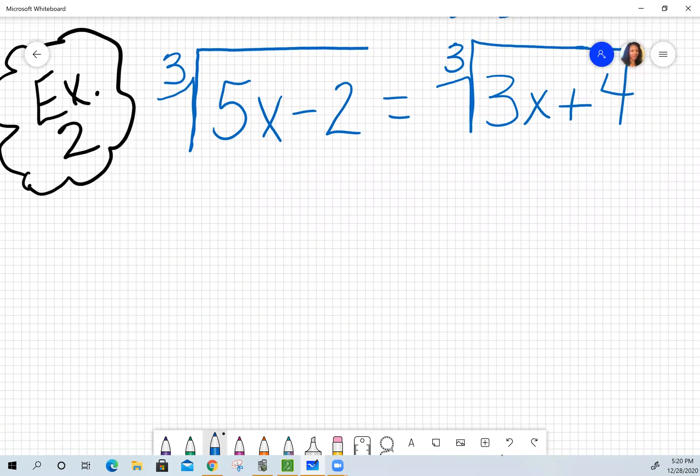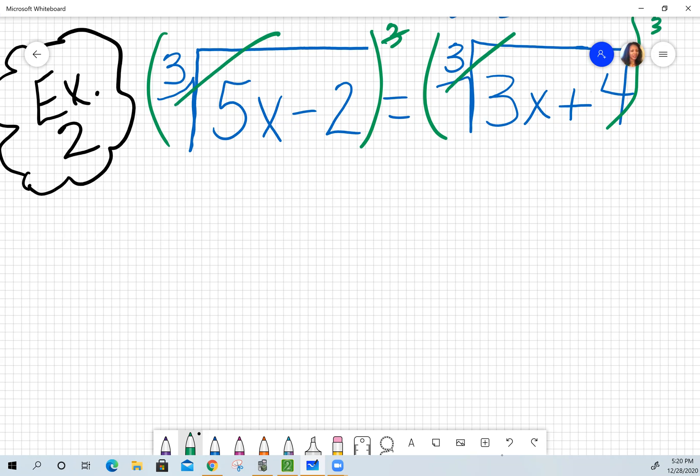This one looks scary to some people, but the rule is, if both sides of your equation have the exact same radical, all you have to do is drop it. The reason you're going to drop it is because if I am trying to get rid of that cube root, I said what I have to do is to cube it. What I do to one side, I have to do to the other. I'm getting rid of it. That's all that means. Then you can go ahead and solve as normal.